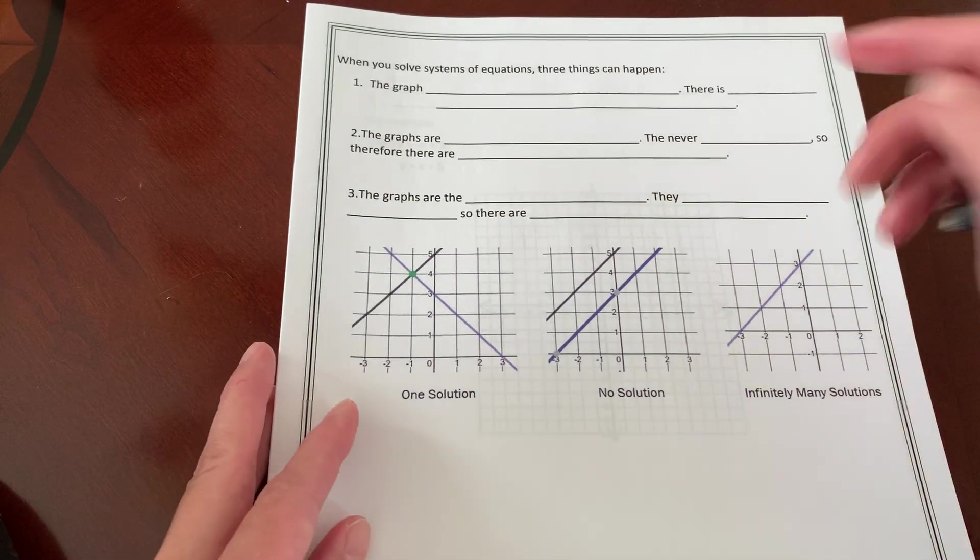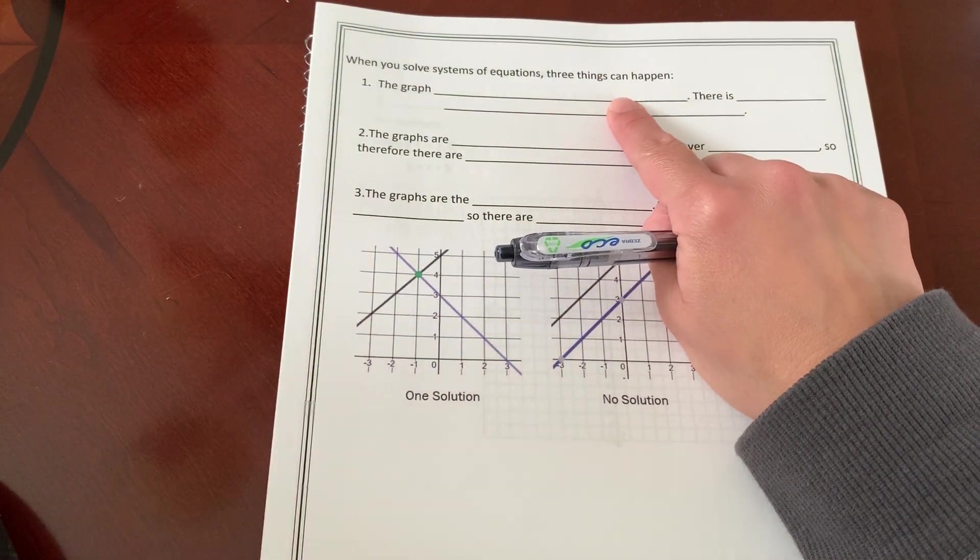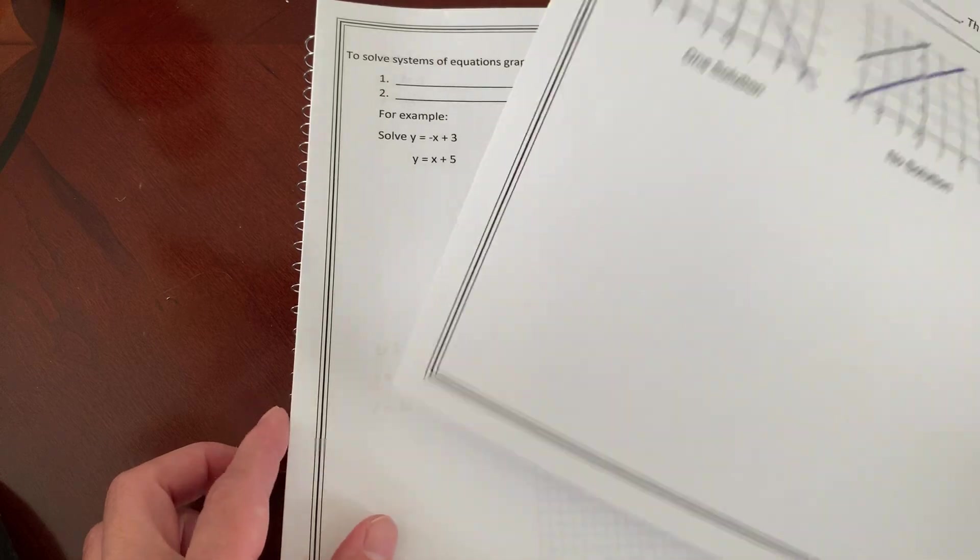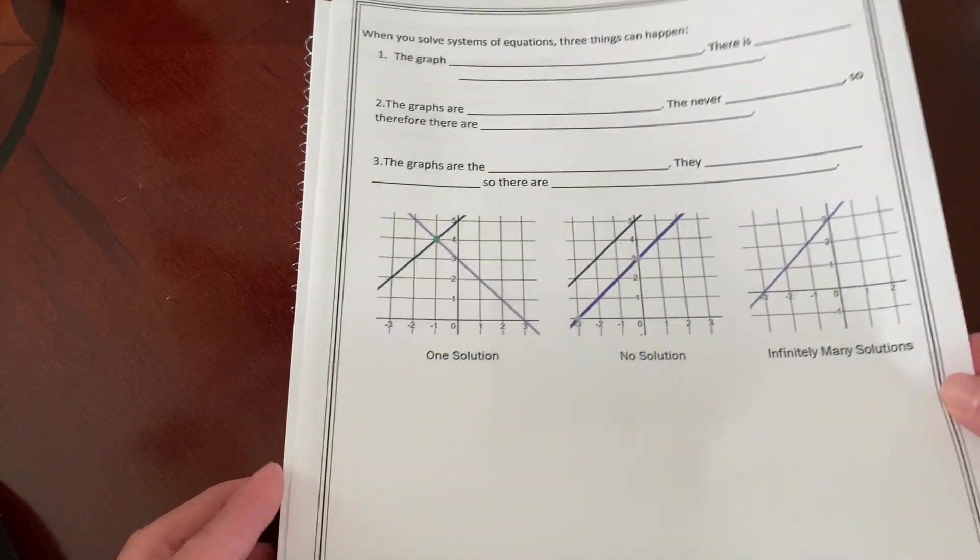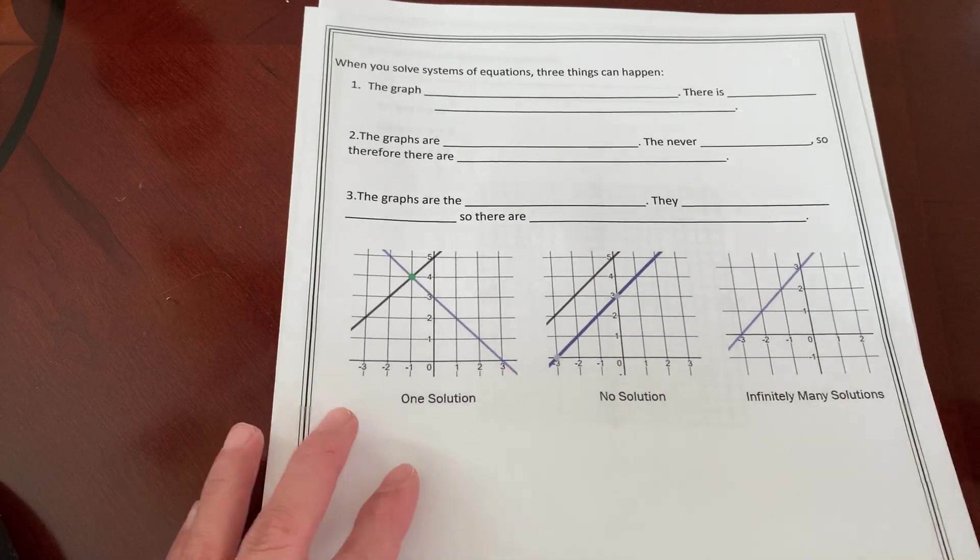Okay, now when you solve systems of equations, three things can happen.